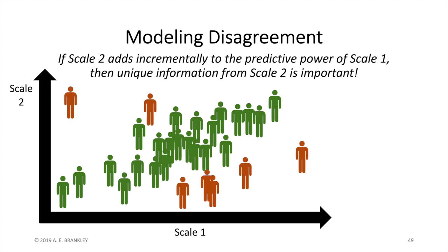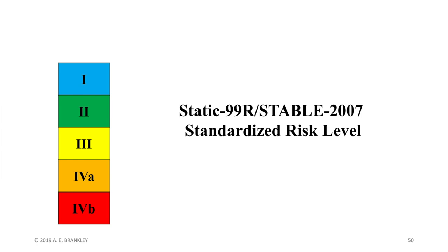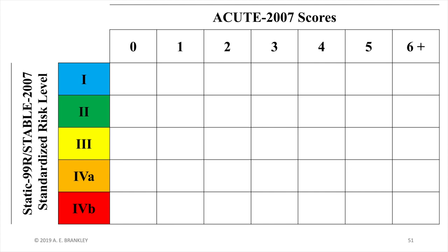We can express this by measuring how far they are from the regression line. These outlier figures represent the disagreement cases that we are going to model. In this context, we begin with the five standardized risk levels produced by combining Static 99R and Stable 2007. Just like in the previous example, we used linear regression to figure out what acute scores are expected at each static-stable risk level. At level 1, most individuals had a score of 0; at level 2, most had a score of 1, and so on.